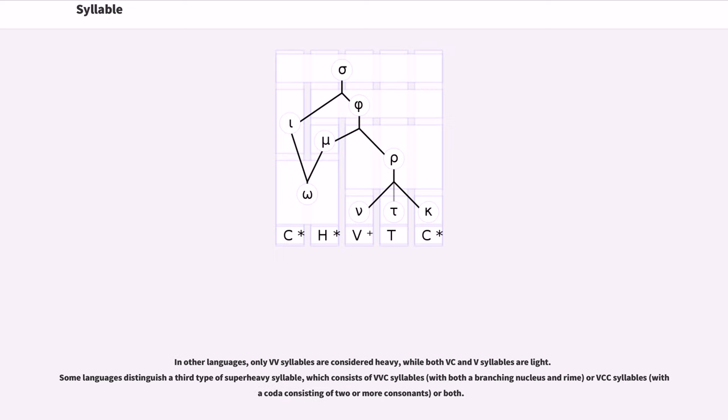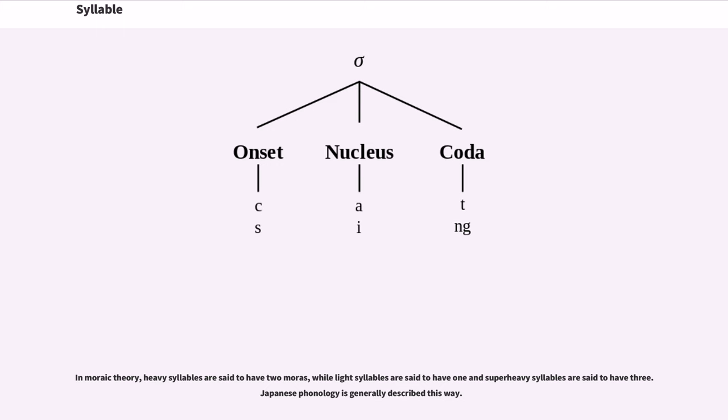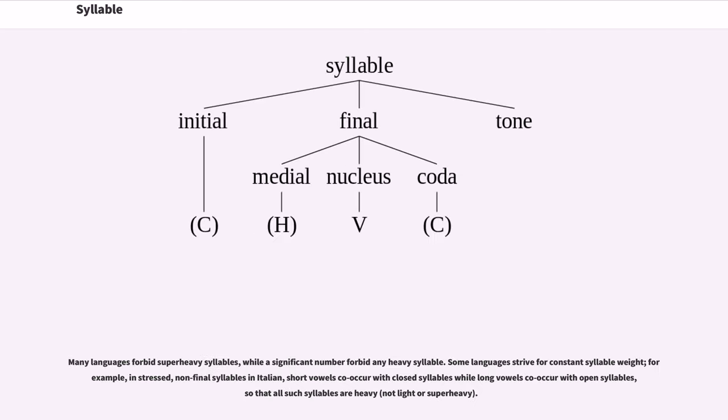Some languages distinguish a third type of super heavy syllable, which consists of VVC syllables or VCC syllables or both. In moraic theory, heavy syllables are said to have two morae, while light syllables are said to have one and super heavy syllables are said to have three. Japanese phonology is generally described this way. Many languages forbid super heavy syllables, while a significant number forbid any heavy syllable.